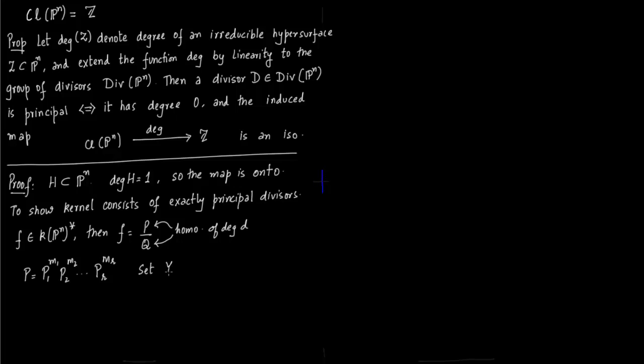Now you write P as a polynomial, so you decompose it into its irreducible factors. Then you can set Y_i as the vanishing set of some polynomial P_i. Similarly for the denominator, you write it as the decomposition of certain irreducible polynomials. Again you set Z_i as the vanishing set of Q_j. Y_i and Z_j are irreducible hypersurfaces in P^n, precisely because P_i and Q_j are irreducible. We have decomposed P and Q into irreducible polynomials.